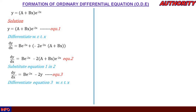Next, we differentiate again for the second time, since we have two arbitrary constants a and b. Differentiating equation three gives: d²y/dx² = -2be^(-2x) - 2(dy/dx). Call this equation four.